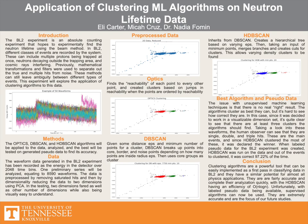DBSCAN clusters by taking a given distance metric called epsilon and minimum number of points in a cluster. It then goes through each data point and finds core points. If there are enough core points to satisfy minimum points, it considers this a cluster.